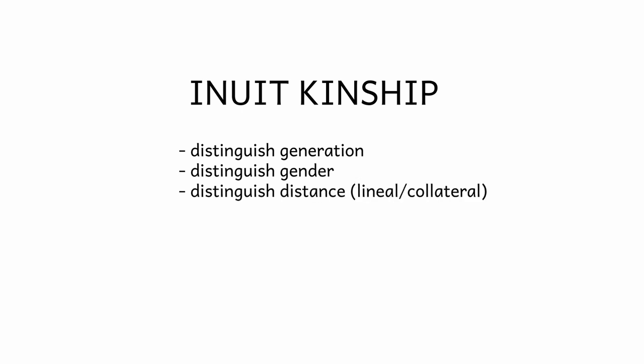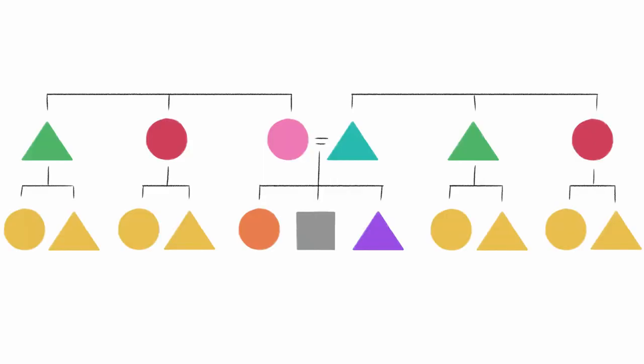This is an Inuit kinship system, where generation, gender, and distance all matter. English is an example of this kind of system. There are exceptions. For example, we don't distinguish cousins based on gender, but the Inuit system is the one that most closely matches English's list of priorities.